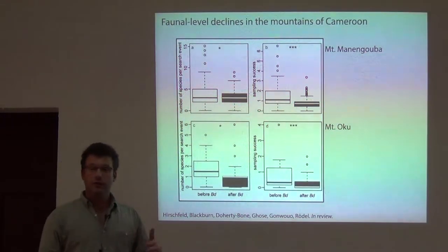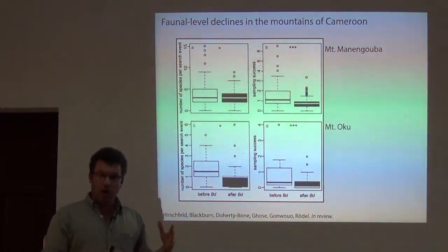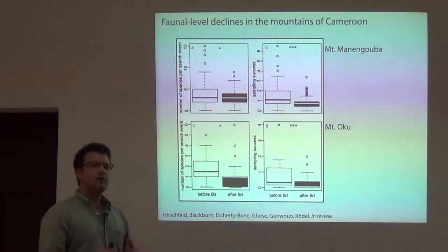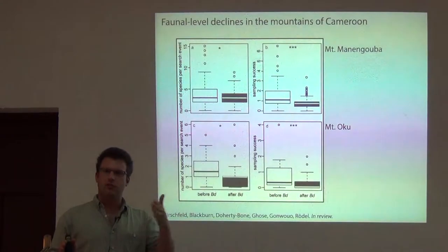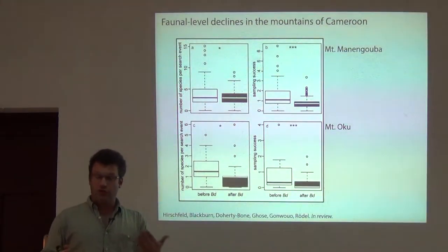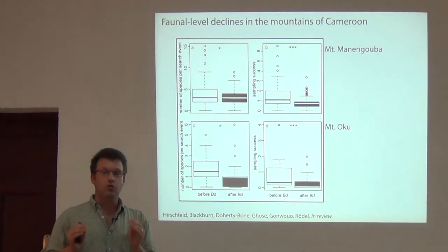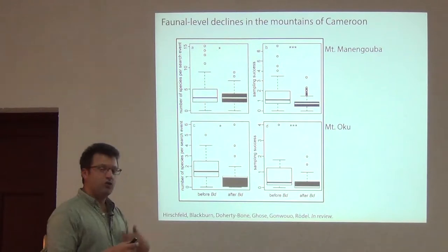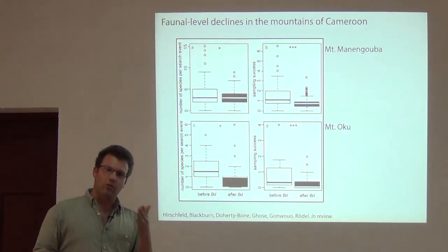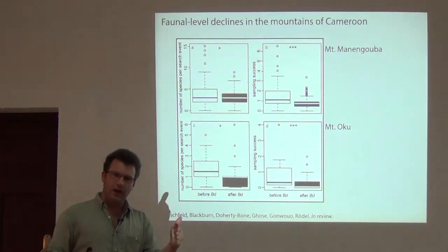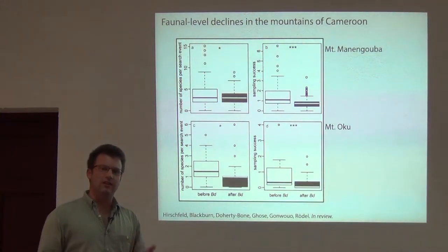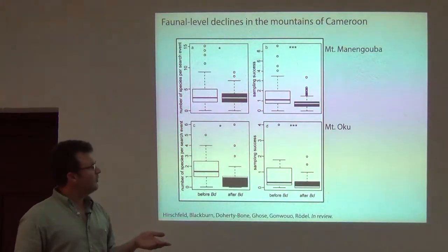And so it seems like there is some sort of decline that's happening here. And right now, this is really correlative. This is not proving causation that this fungus is causing the declines. But just based on our survey data in a single place through time, we're understanding that something is happening to this fauna. Some species seem to be the same as they were 10 years ago, and some species are incredibly uncommon, whereas 10 years ago we could find them half the time we went out. So something is happening to that.